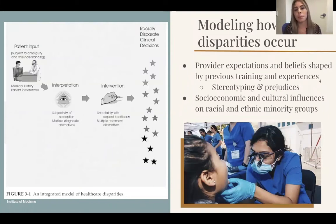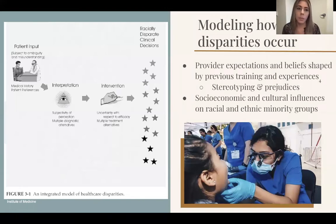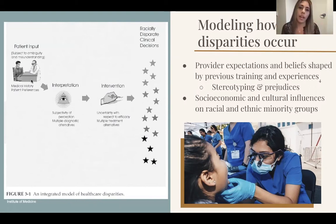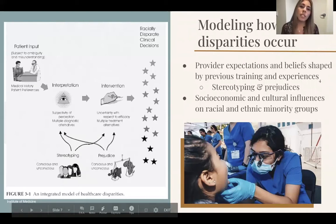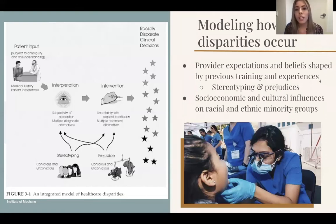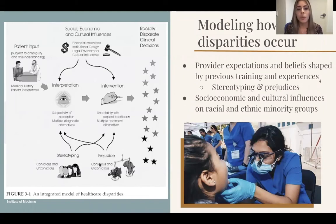This model from the Institute of Medicine attempts to display how racial and ethnic disparities emerge. When a patient presents with a chief complaint, the provider possesses expectations and beliefs shaped by training and experience — even subconsciously. These experiences shape perception and cultural sensitivity when evaluating a patient and determining treatment. Unfortunately, this is also when prejudices and stereotypes can influence judgment and open the door for racial and ethnic biases to affect clinical outcomes. This lack of an evidence-based approach is what can lead to racial and ethnic disparities.